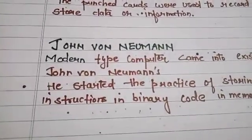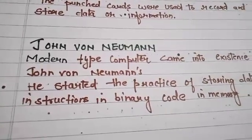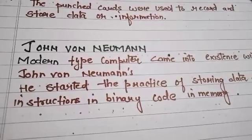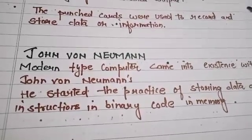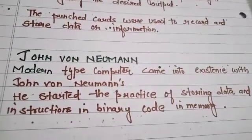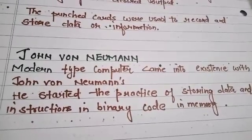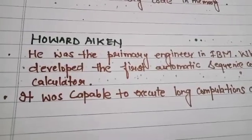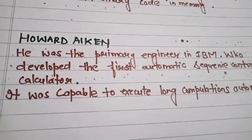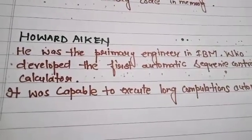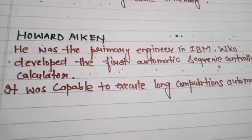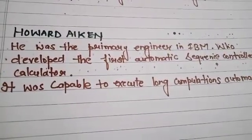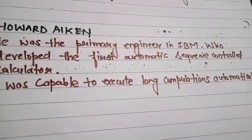John von Neumann brought the modern type computer into existence. He started the practice of processing data and instructions in binary code in memory. Howard Aiken was the primary engineer at IBM who developed the first automatic sequence controlled calculator. It was capable of executing long computations automatically.